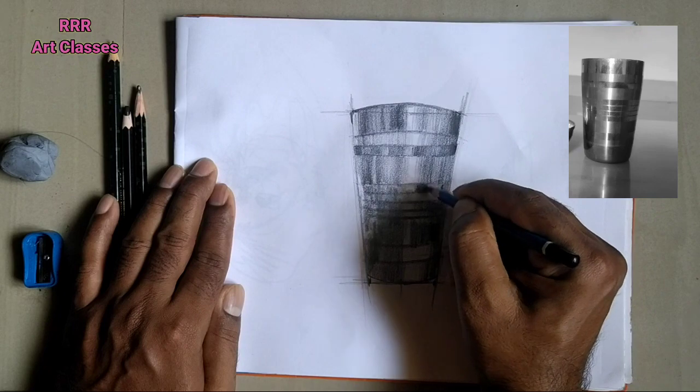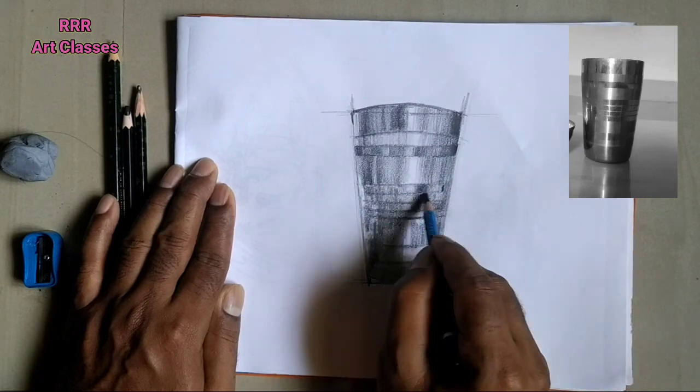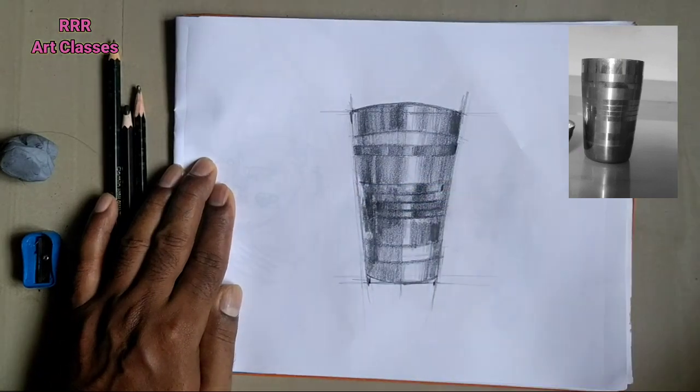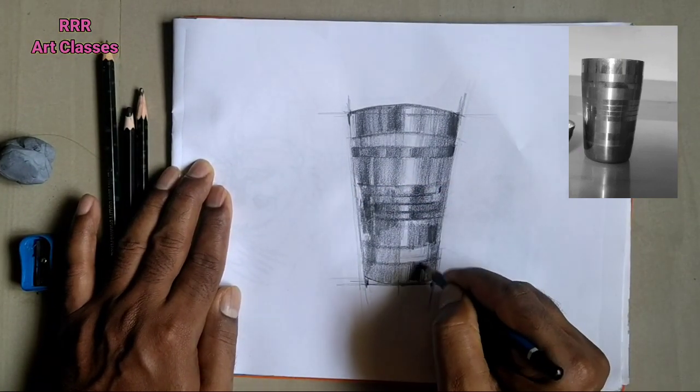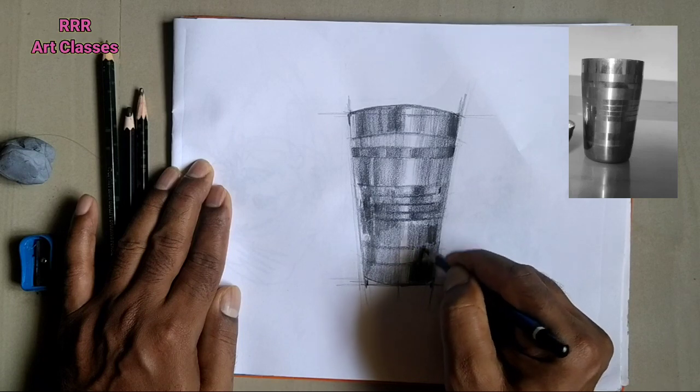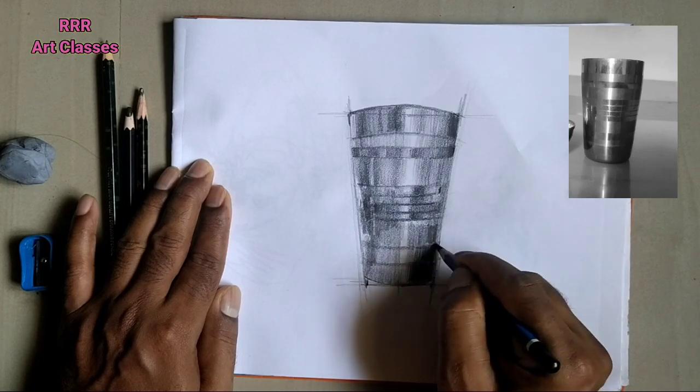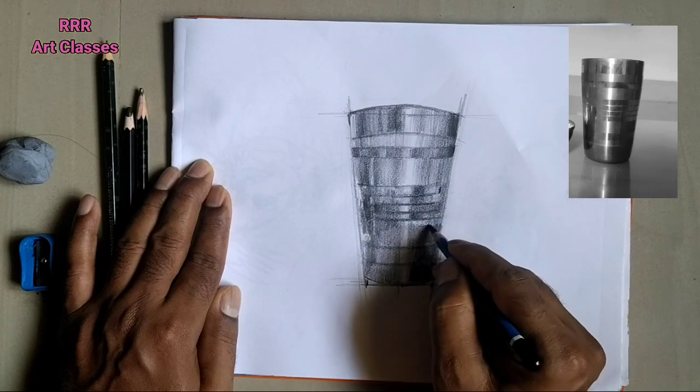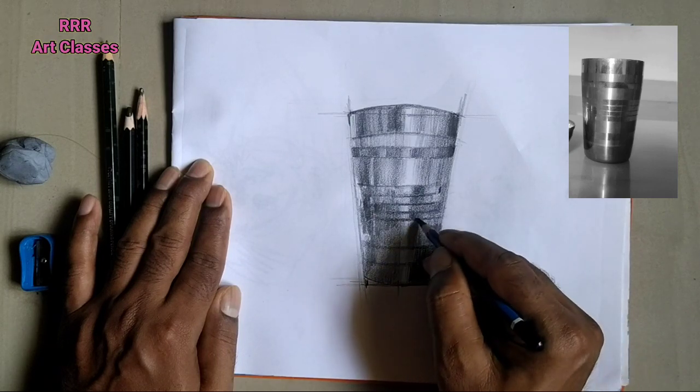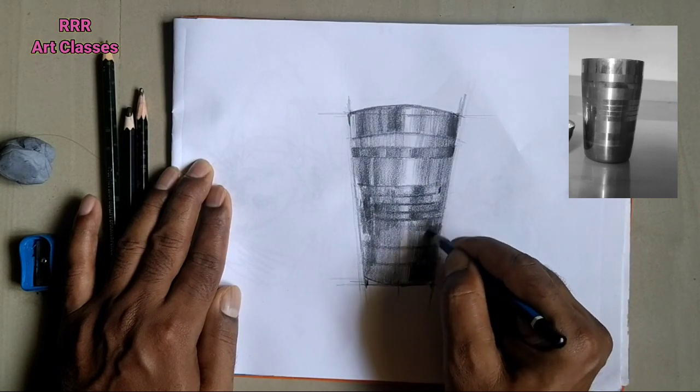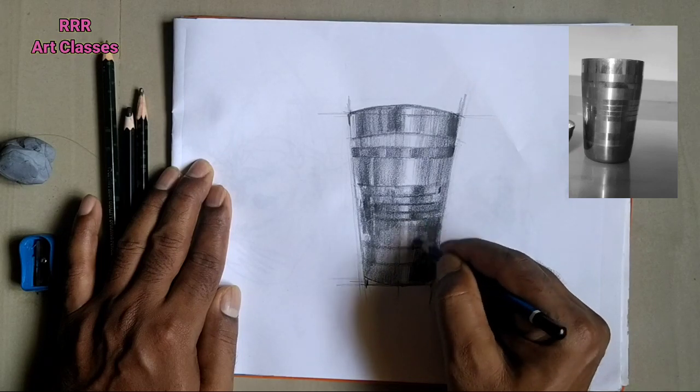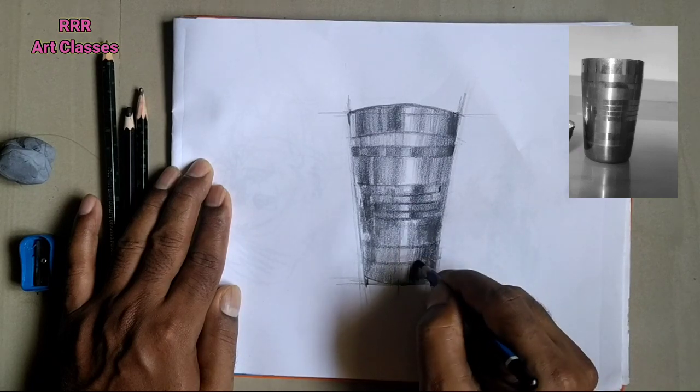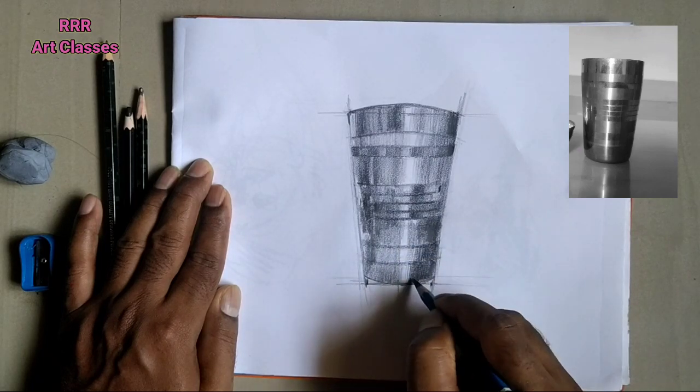As you can see the reference image, there are a lot of reflecting lights on its surface. If I would have taken a very flat surface like a book or a paper box, that might be we don't have this kind of reflection on its surface. As it is a steel surface and it is very shiny and lustrous, it is having a lot of reflection on it. So deliberately I have taken this reference to make you understand how to create those reflections in your drawing.